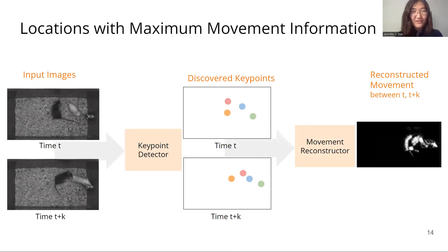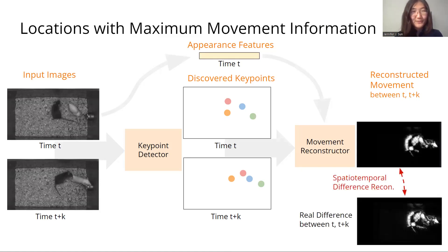Since the keypoints are sparse and may not encode all visual details, we also encode appearance features of the image at time t. The input to movement reconstruction is appearance features and keypoints at time t and only keypoints at time t plus k. The model is self-supervised using spatiotemporal difference reconstruction to the real agent movement between t and t plus k.